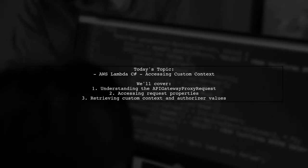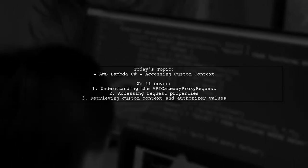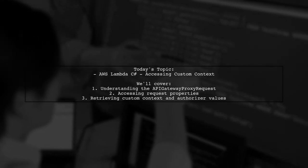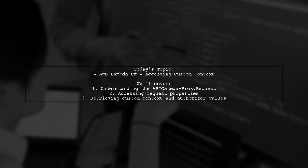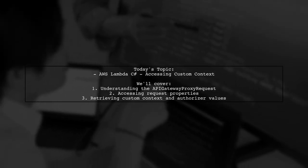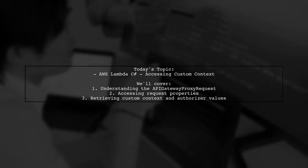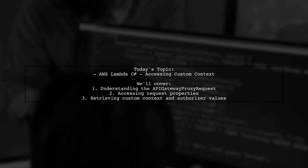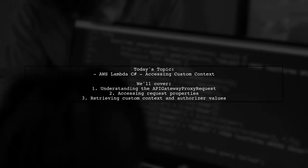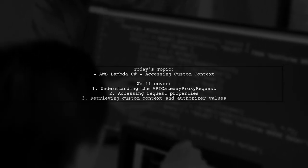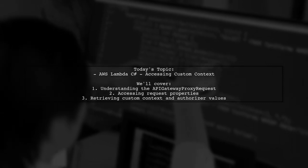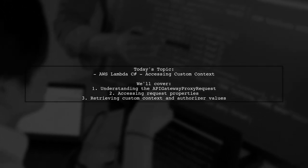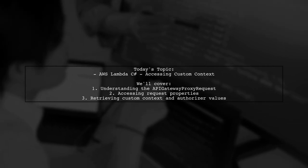Welcome to our AWS Lambda tutorial. Today we're tackling a question that many .NET Core developers encounter. Our viewer is curious about how to access custom context and authorizer values in their Lambda function written in C-sharp. Let's dive into the details and see how we can unlock the full potential of the API Gateway proxy request object.